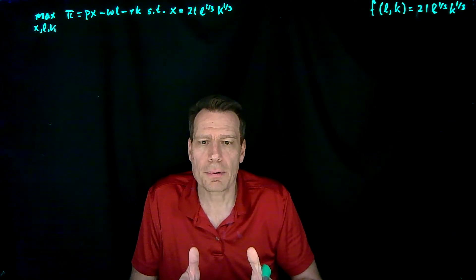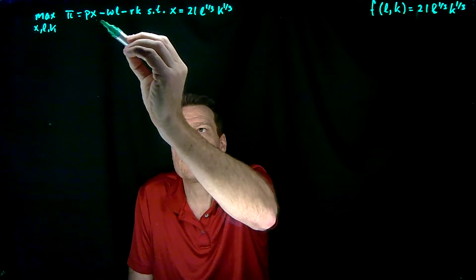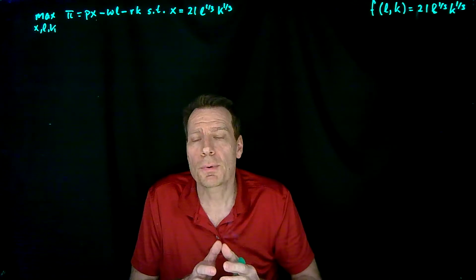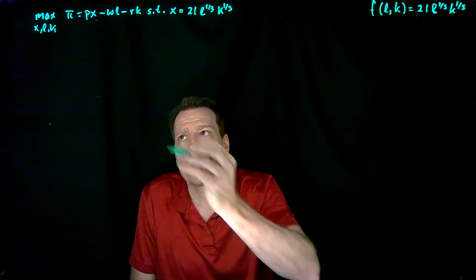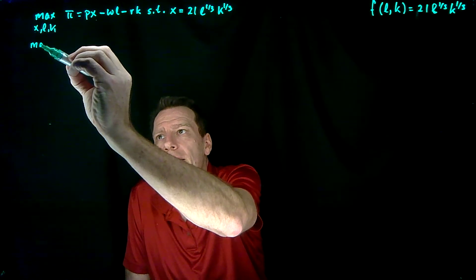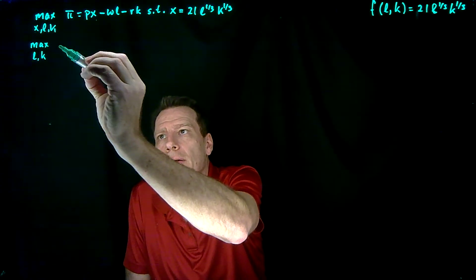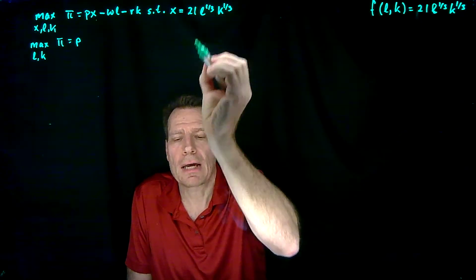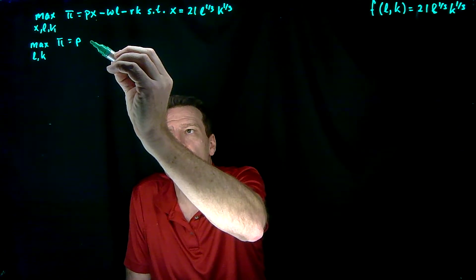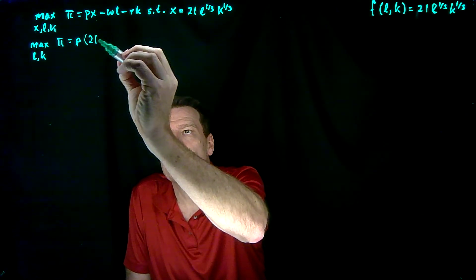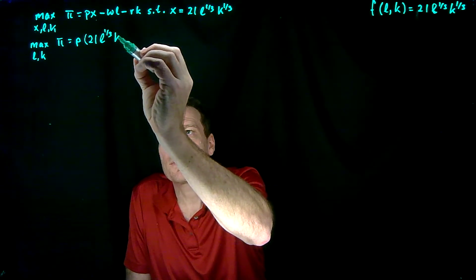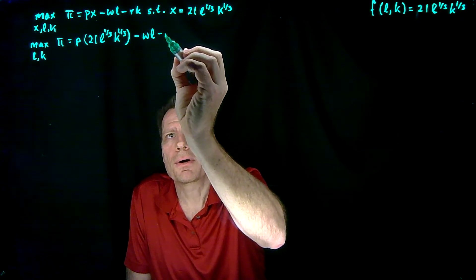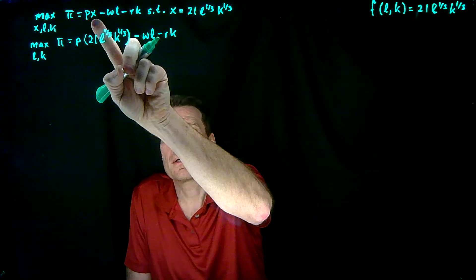It's a little easier to do that problem if we substitute this constraint into the objective function — we just have to take two derivatives rather than three, which we would have to do if we set up the Lagrangian. So we can rewrite the problem as: maximize over labor and capital, profit equals price times 21L to the one-third K to the one-third, minus WL minus RK. All we've done is substitute in for X.